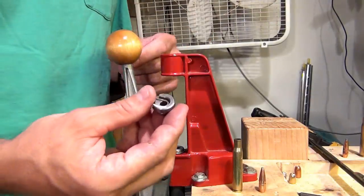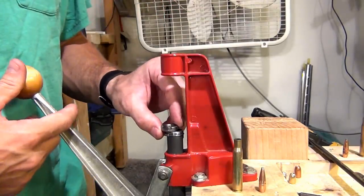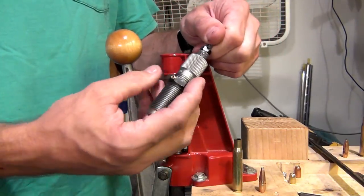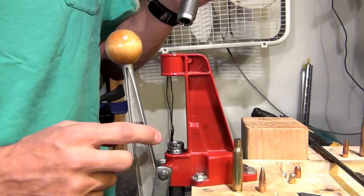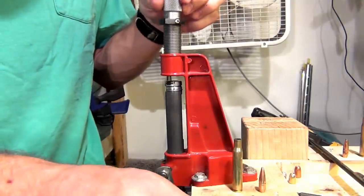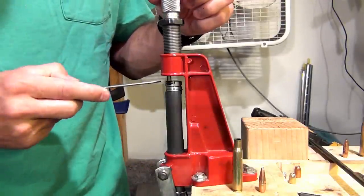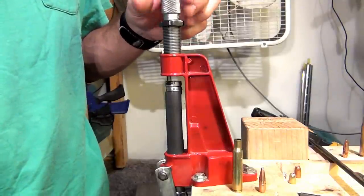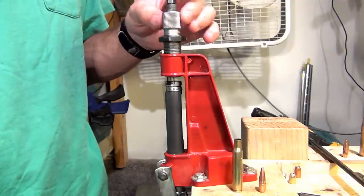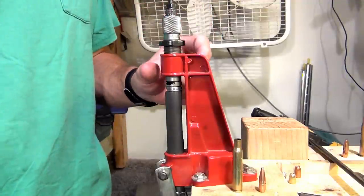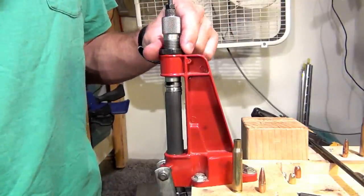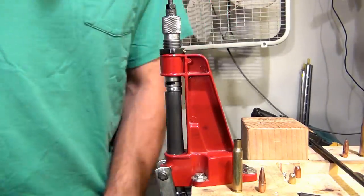Now we have our press. First thing I want to do is take my shell holder and insert it into the press. I'm going to take my decapping die, or my resizing die as it's commonly referred to, and I'm going to raise the ram all the way up. I'm going to thread the decapping die downward until the die body touches the shell holder. Once it touches the shell holder, I'm going to lock the die lock ring. This will lock the die into place. And that's all there is to it.